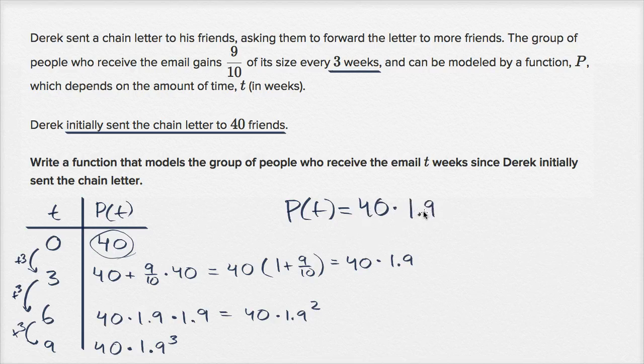And we multiply by 1.9 every three weeks. So we could just say, how many three week periods have passed by? Well, we will take t and divide it by three. t divided by three is the number of three week periods that have gone by.